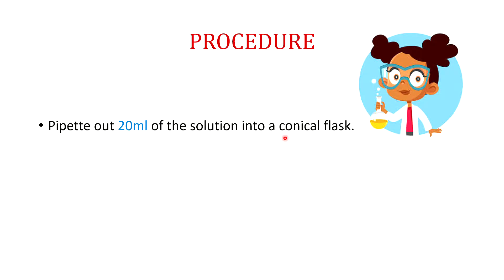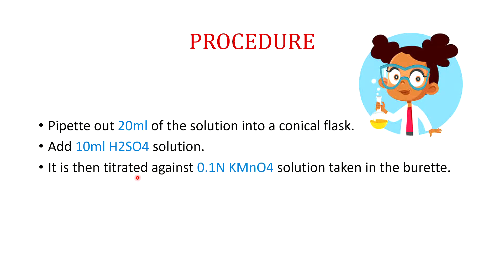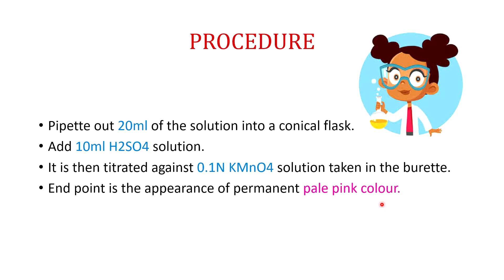Now for the procedure: take 20 ml of iron ore solution in a conical flask. Add 10 ml of H₂SO₄ solution. Then titrate against 0.1N standard KMnO₄ solution. We will not add any indicator because KMnO₄ is itself a color-producing reagent. The end point is the appearance of a permanent pale pink color.